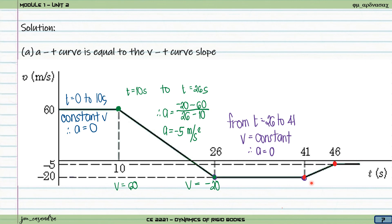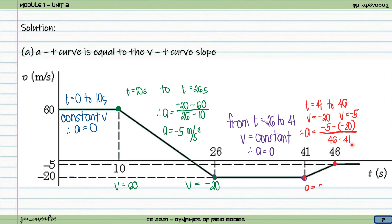For time 41 to 46 seconds, the acceleration is computed as negative 5 minus negative 20 divided by 46 minus 41, which gives a positive 3 meters per second squared. And from 46 up to 50 seconds, the line is horizontal — constant value — so acceleration is also equal to zero.